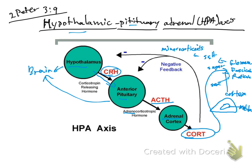For sugar, that's cortisol from the zona fasciculata. For sex, in the zona reticularis, the hormone produced is androgens. So from the outer to the inner layer of the cortex, not counting the medulla: mineralocorticoids increase sodium — related to salt; cortisol increases glucose — related to sugar; and androgens increase sex hormones. So those are the three layers and their respective hormones.